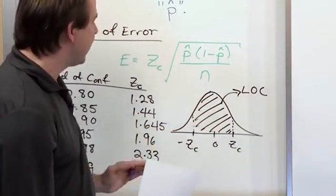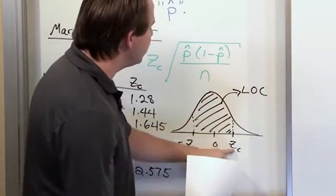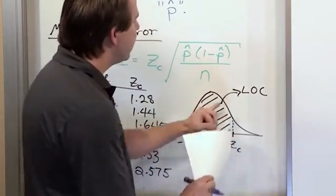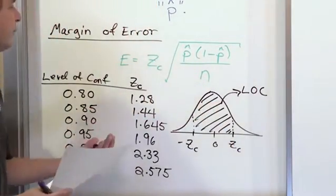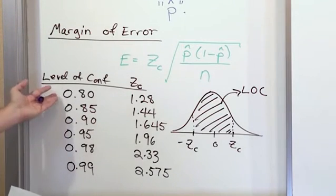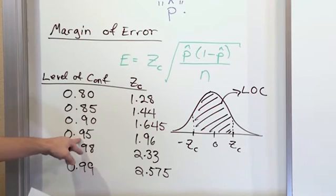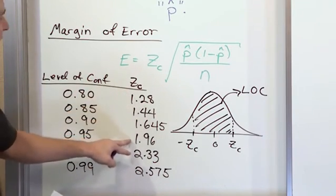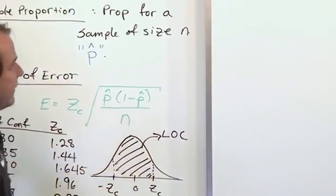You could look in the chart in the back of the book to figure out what area would lie between here, 0.95, and get a plus or minus value of Z. That's what the level of confidence is. But since it's a normal distribution and we use the same percentages repeatedly, we've already tallied this information for you. For a 0.95 level of confidence, which is 95%, the critical value of Z is 1.96. That means this value is 1.96, and this value is negative 1.96.